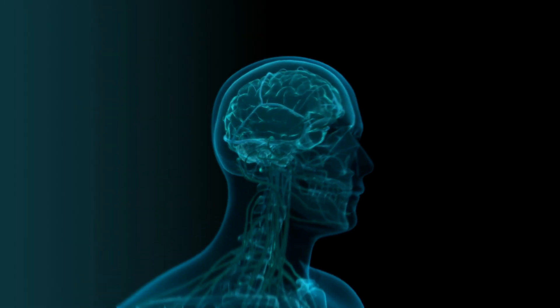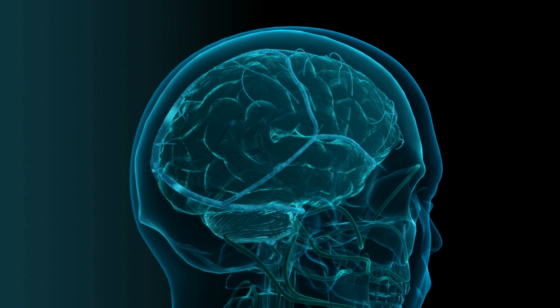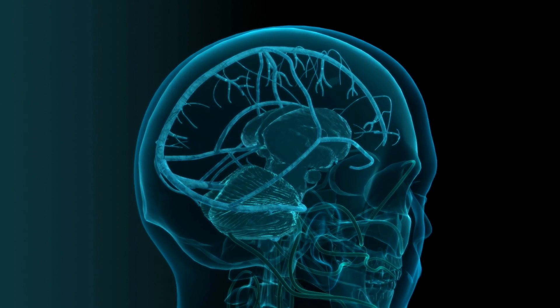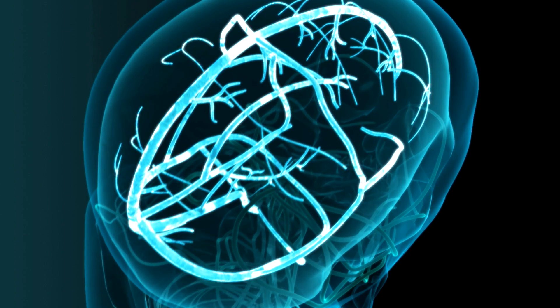What we discovered is a lymphatic vasculature in the brain within the meninges layer. This lymphatic system functions by draining cerebral spinal fluid, which washes the brain and removes all the toxins.